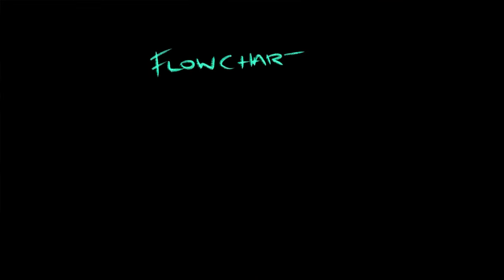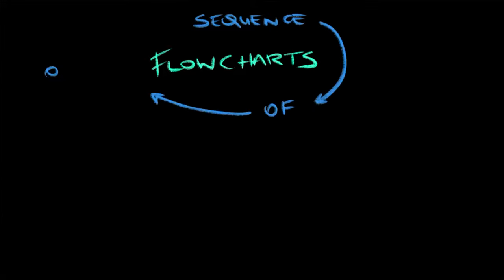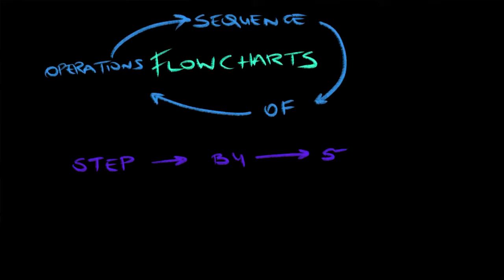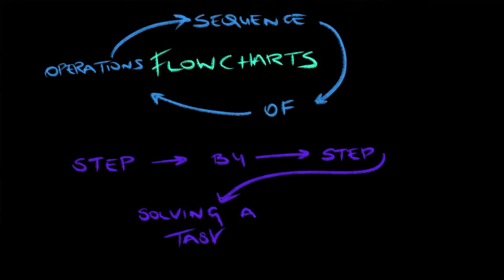Flowcharts are diagrams which are used to show the correct sequence of events in an operation. In simple words, it is a step-by-step chart of how to solve a task. The majority of tasks are made up of three simple things: an input, a process, and an output.